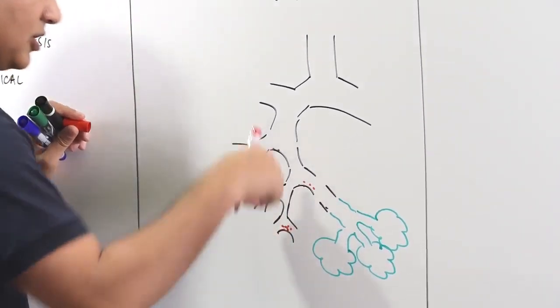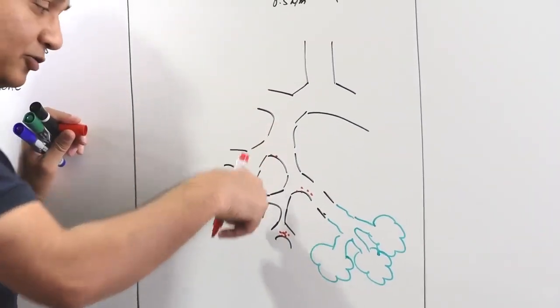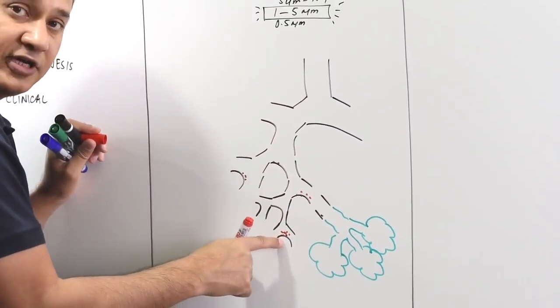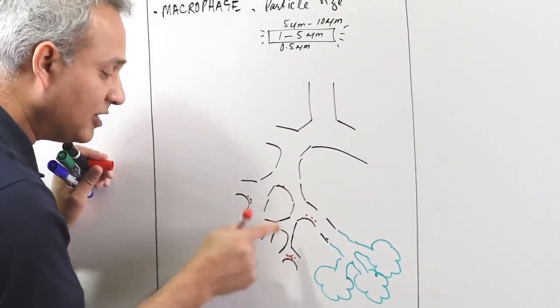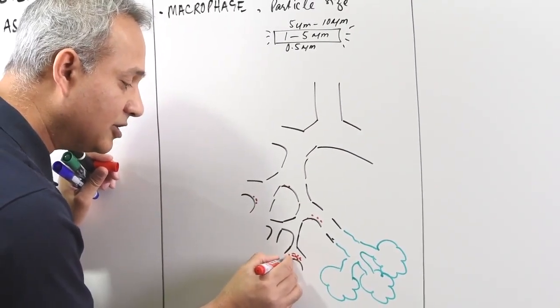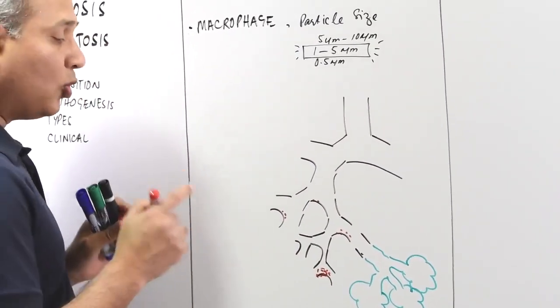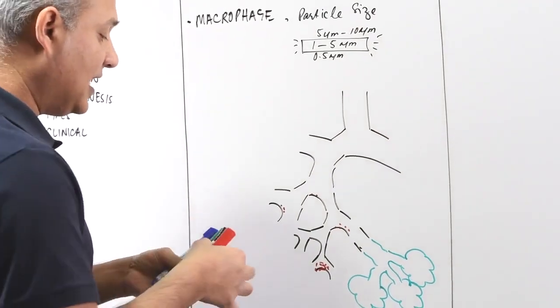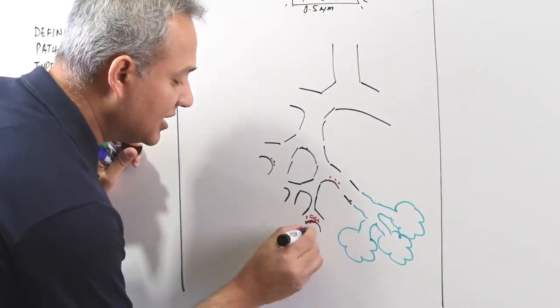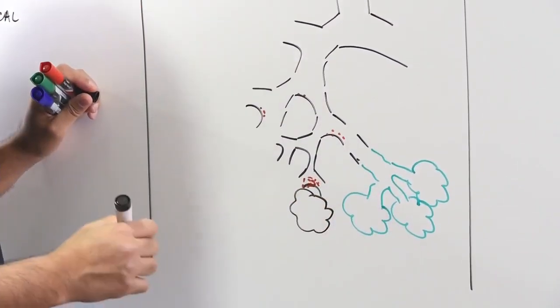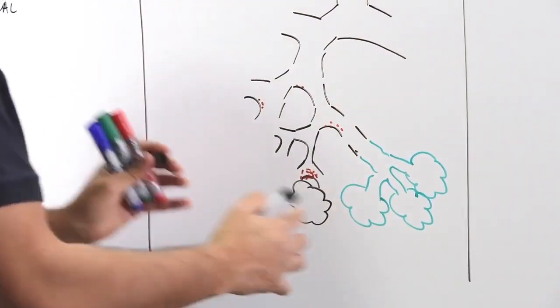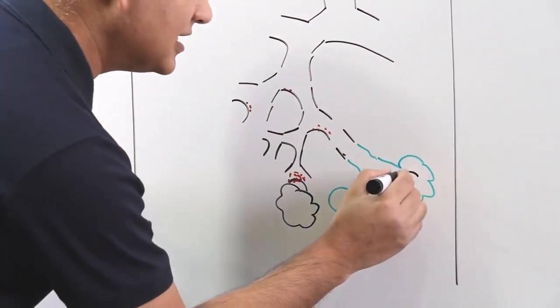That is where they get stuck. Why do they get stuck here? Because when they are going straight down, they would hit this bifurcation. When they hit there, they get trapped in the mucus there. Once they are trapped there, then the macrophages that are present in this area and macrophages are present in this whole tree. They are present inside the alveoli.